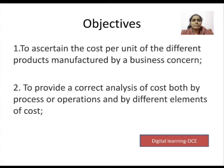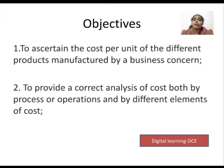For example, let's say we have a jam factory. In a jam factory, you cannot make just one bottle of jam. If you give one thousand kg of input, you would produce one thousand bottles of jam — just as an example. So when you spend a certain amount to produce one thousand bottles of jam, you need to know the total cost incurred.